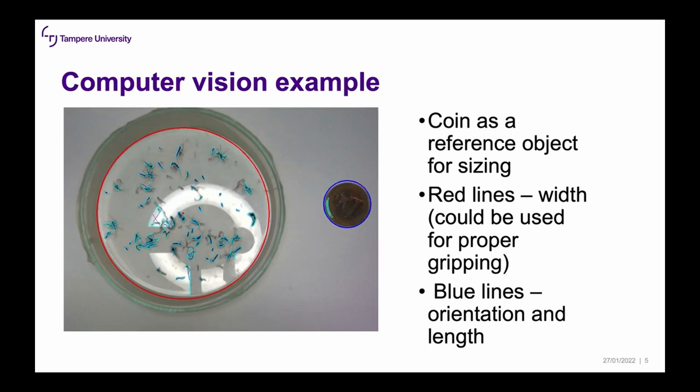Here are some examples for computer vision. You can see a petri dish and a coin — the coin is used as a reference object for sizing. The dish itself is about 9 cm in diameter, so you can imagine how small these bugs are; usually they are just a couple of millimeters. The red lines, aside from the big circle which detects the dish, indicate the axis we would use for proper gripping, and the blue lines show the orientation and length.